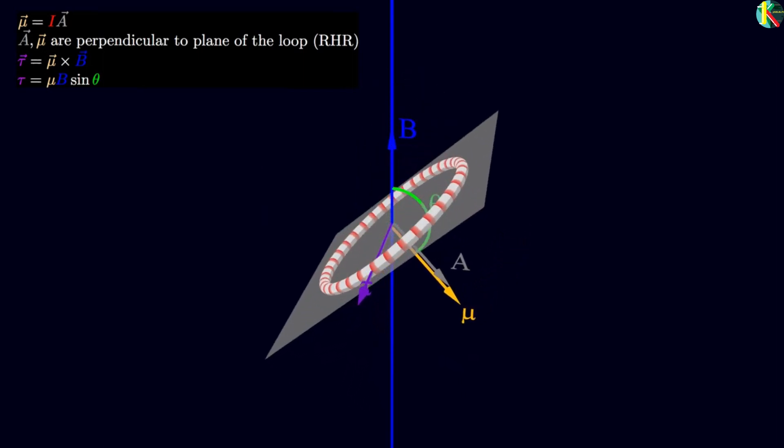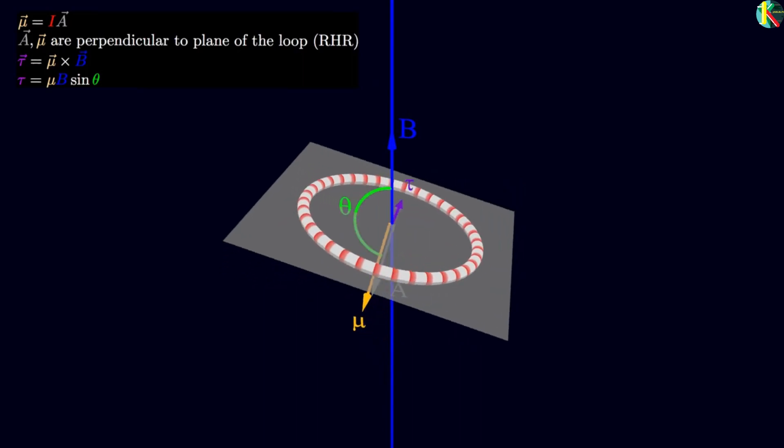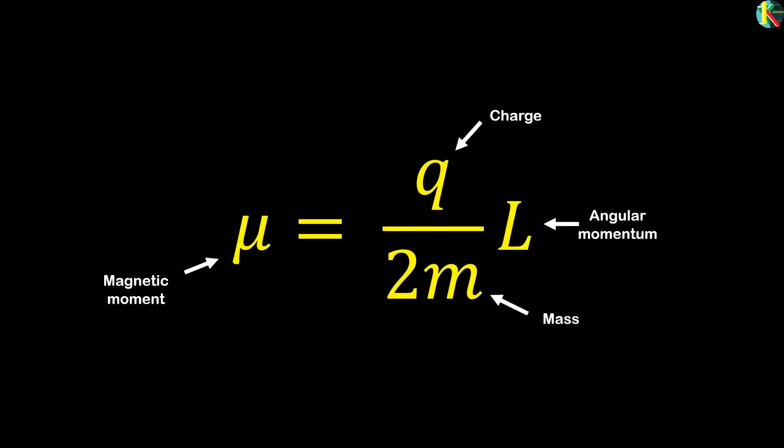The strength of that rotational pull or the torque is defined by the object's dipole moment. For a rotating charge, that depends on the object's angular momentum, charge and mass. Here's the equation for the classical dipole moment for a non-quantum rotating charge.